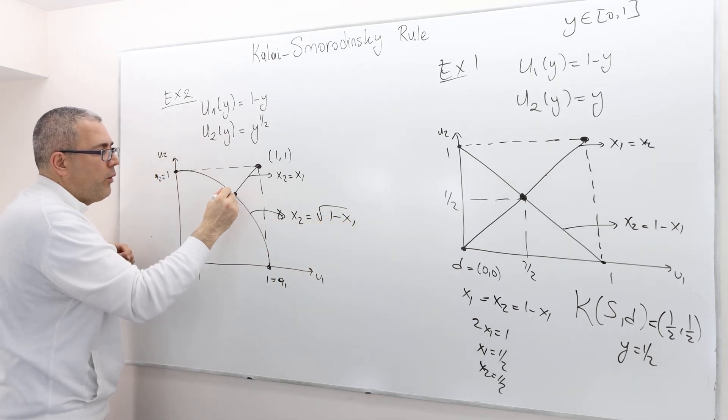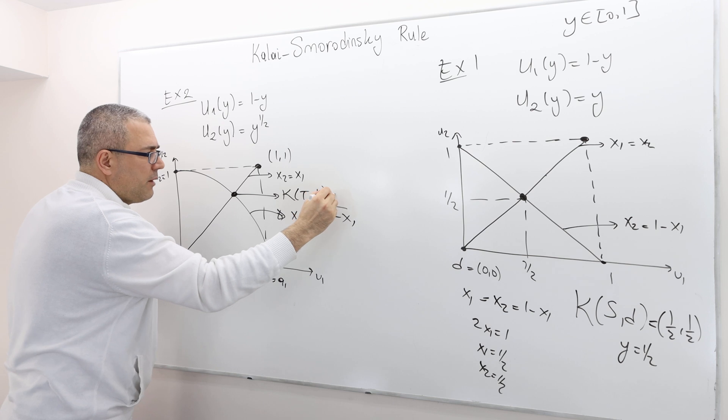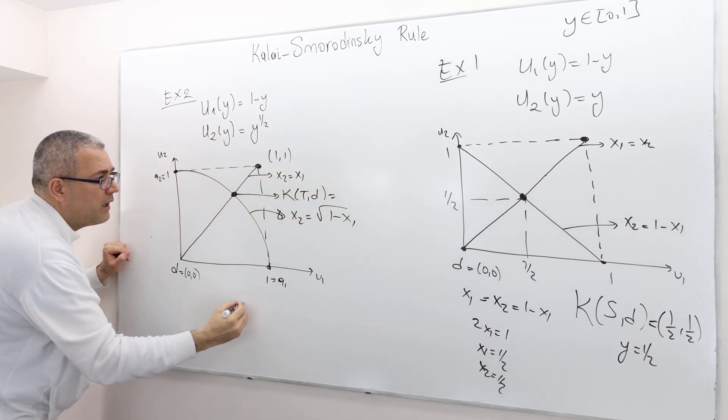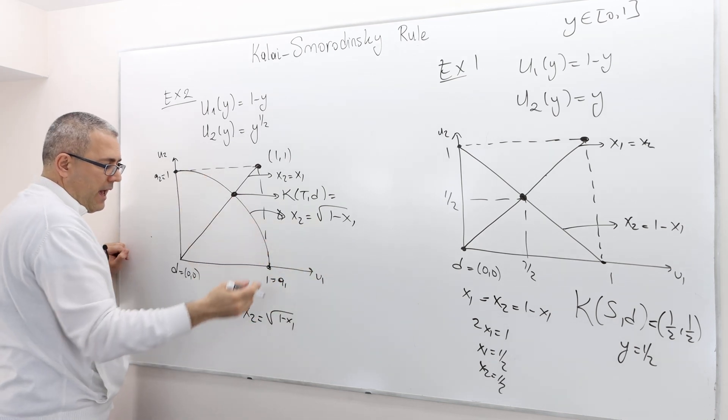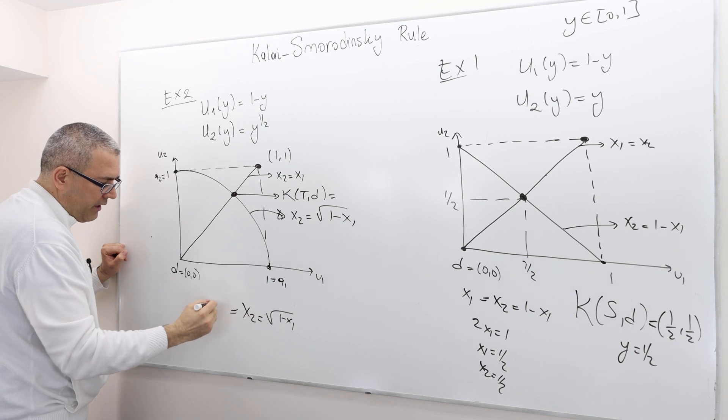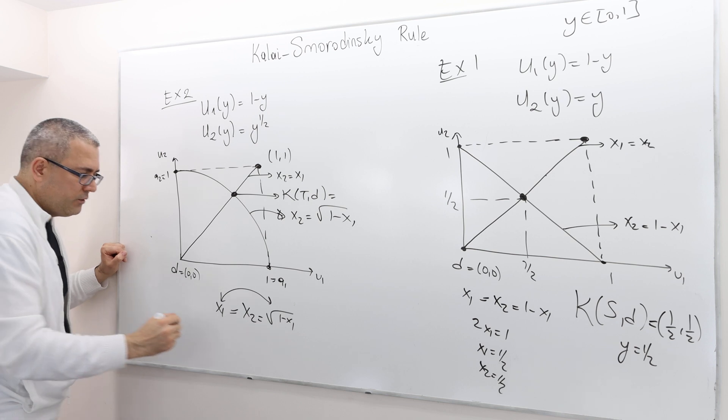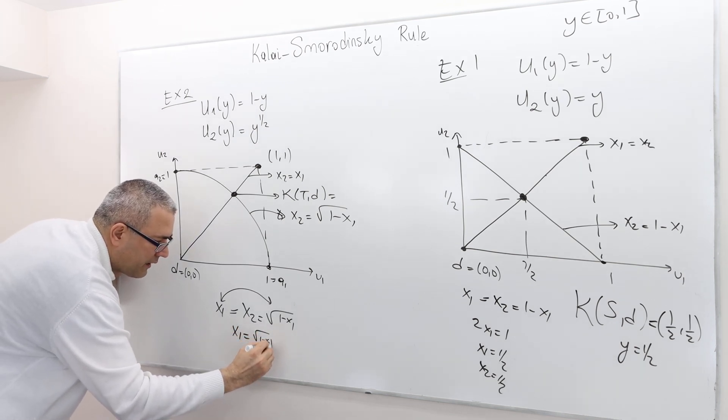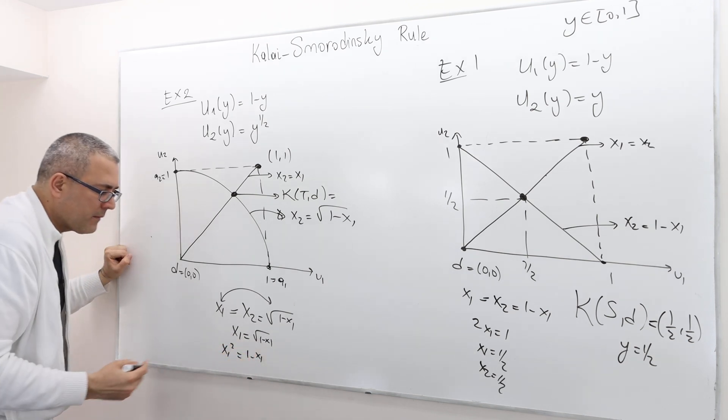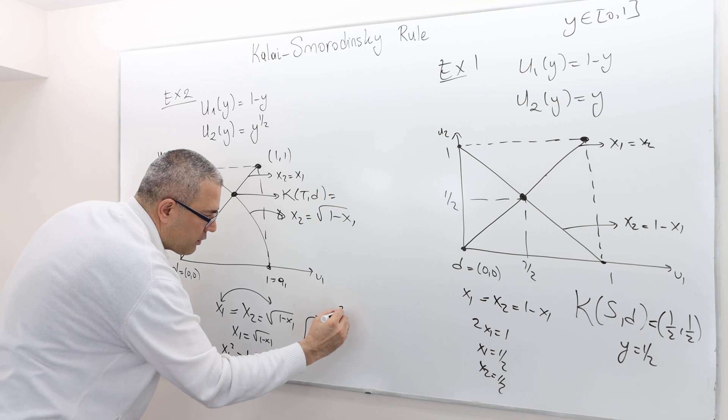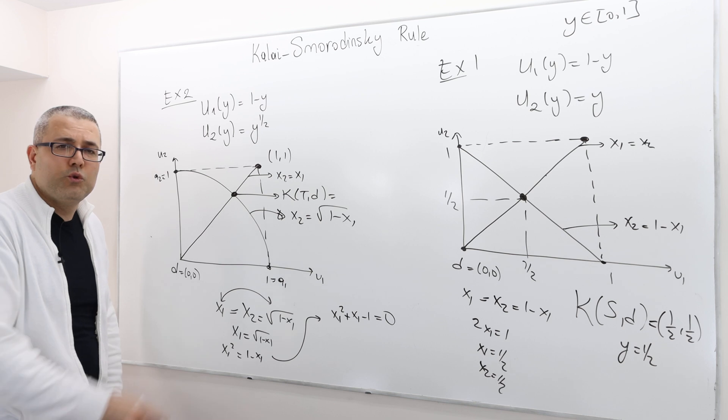So therefore, if you want to find this point, which is the Kalai-Smorodinsky point of this bargaining problem, well, you have to set them equal. So x2 equals squared of 1 minus x1, which is this curve. And x2 equals x1, which is the straight line. So therefore, x1 equals, use this equality: x1 equals squared of 1 minus x1. Take the square of both sides. x1 squared equals 1 minus x1. So that means x1 squared plus x1 minus 1 equals 0.